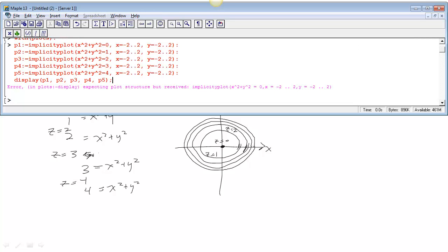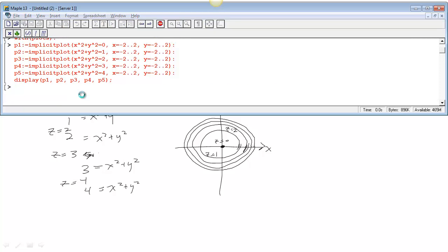What have I done wrong here? Oh, got a spelling error in here. I did implicit plot. Okay, so implicit plot is the name of the command. Let's see what we get now.